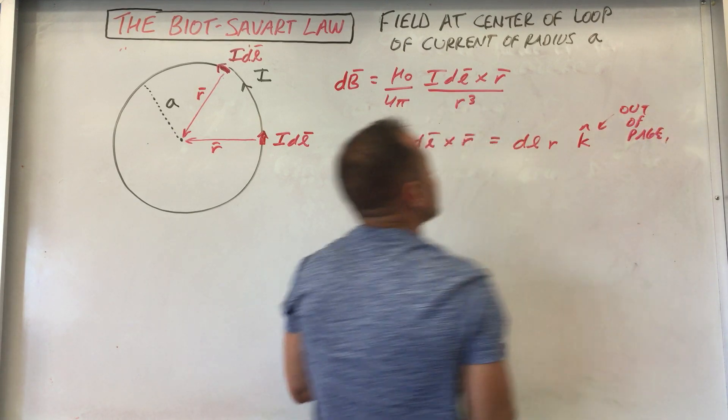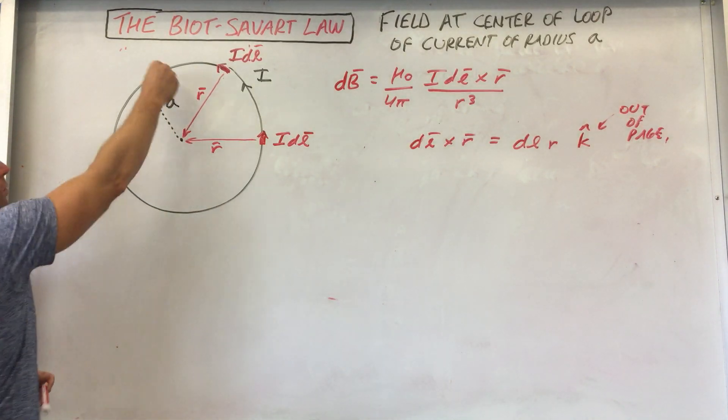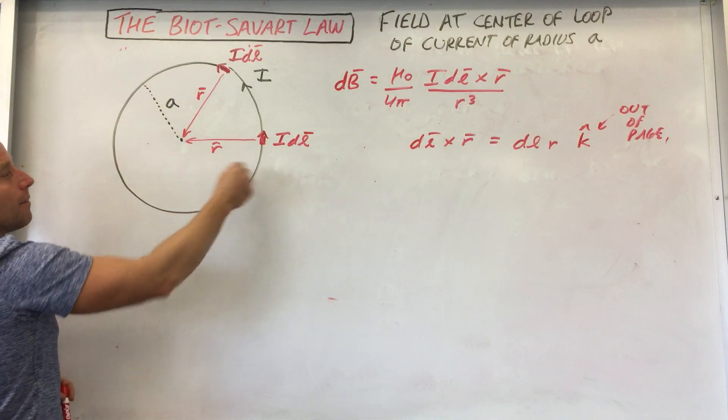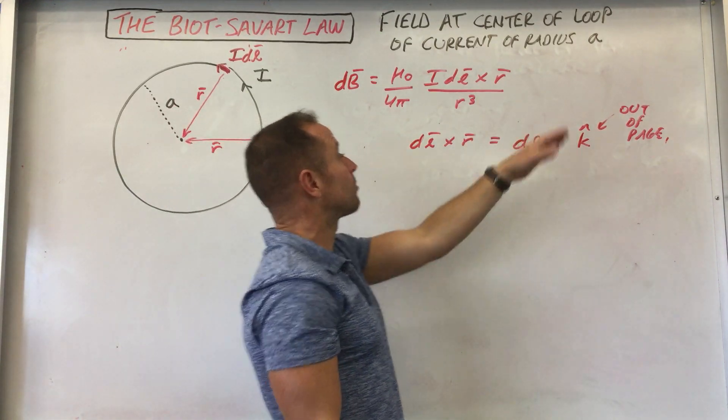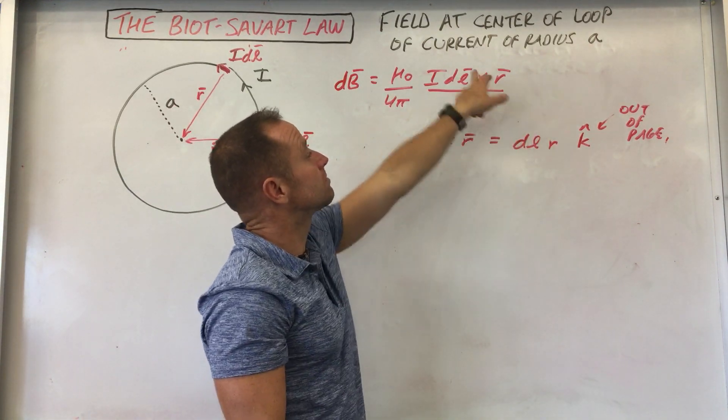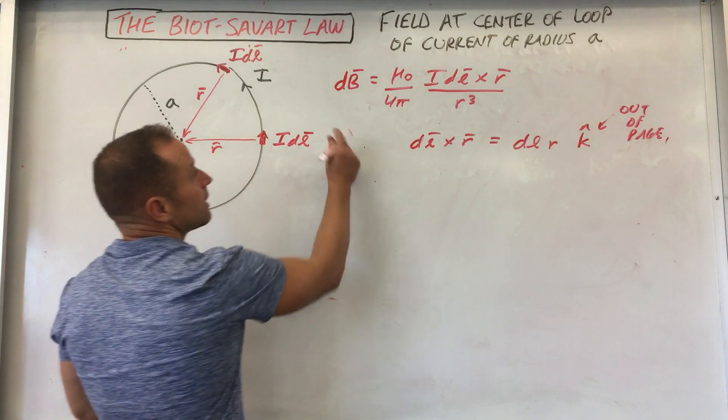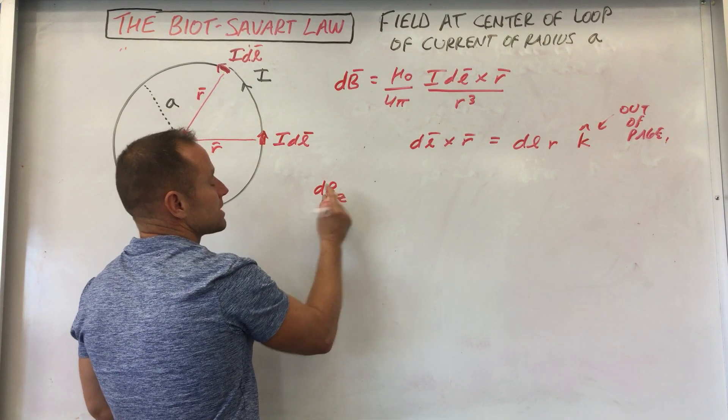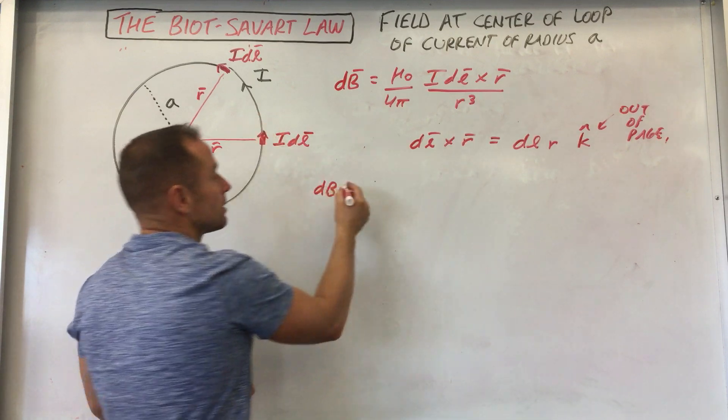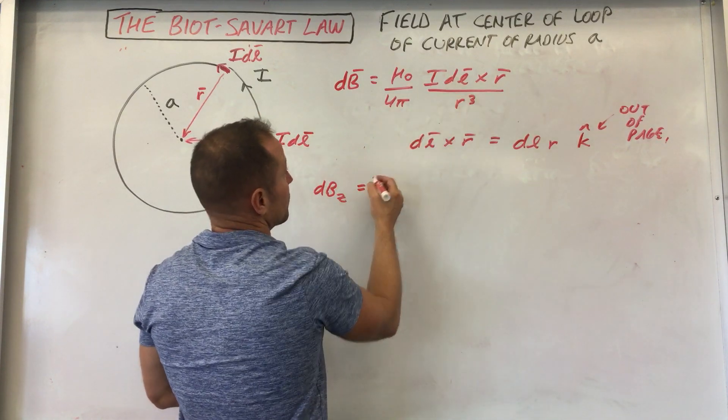Well, that just made life a lot simpler because what that means is no matter where we are on the circle, DL cross R is always just DLR pointing out of the page. Well, so we can just stick that in there. So now what we've learned is that DB is always pointing basically in the Z direction. It's gotten rid of the cross product.